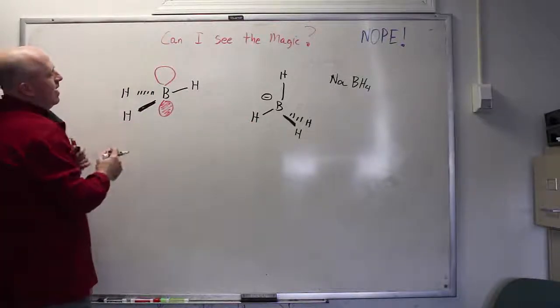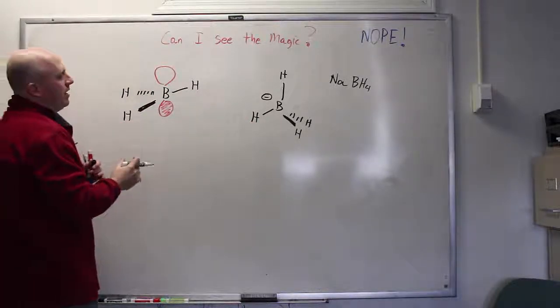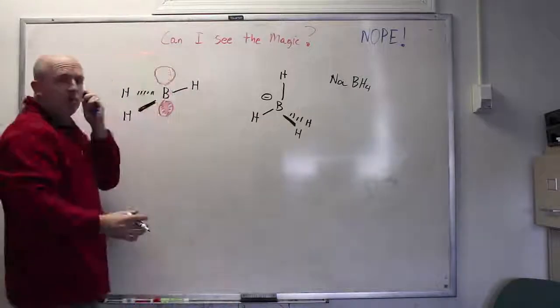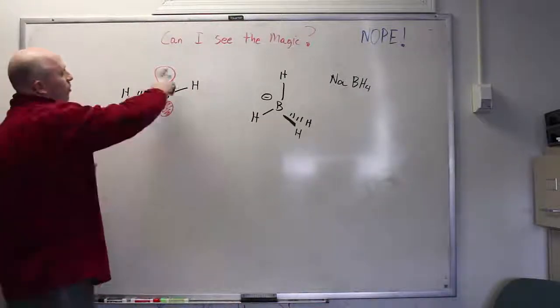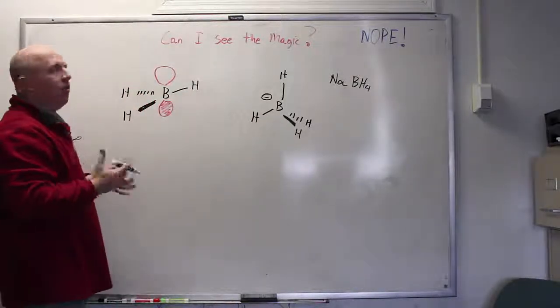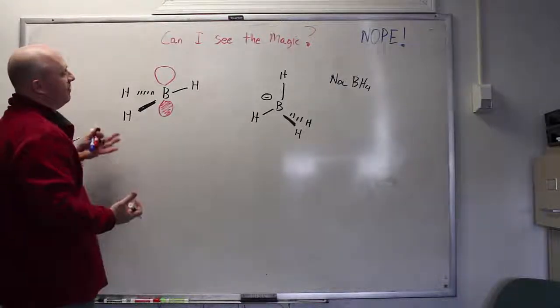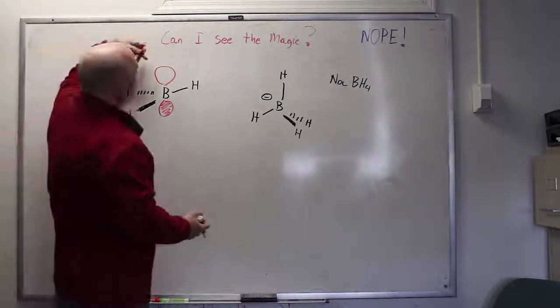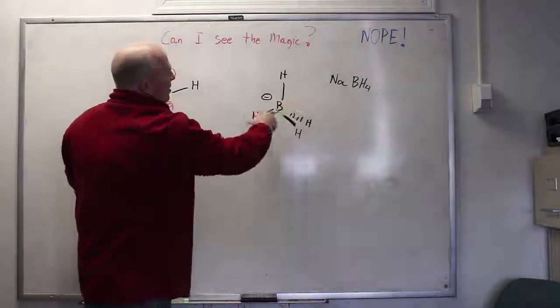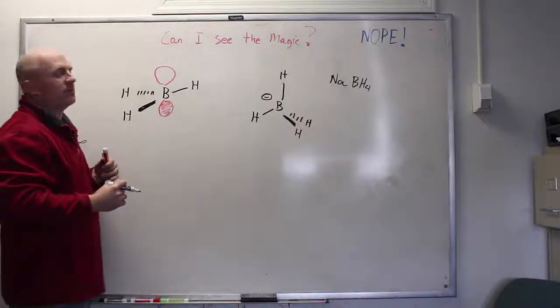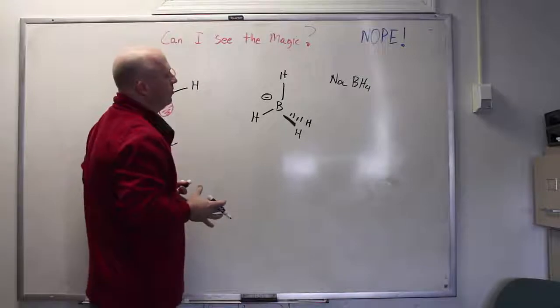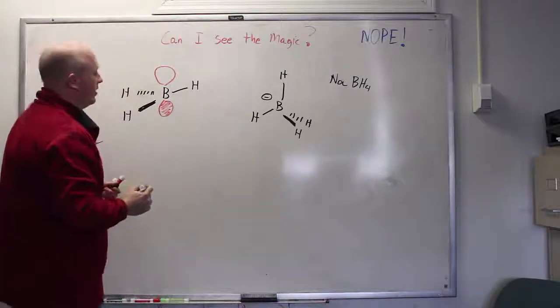So if borane is unhappy as it exists as BH3, and it's unhappy in this form, you imagine that this is fairly reactive stuff. Borane is a good Lewis acid. It always has an empty orbital to be filled by other electrons, but as soon as you fill that orbital with electrons, then all of a sudden you have reached a relatively unhappy situation. This boron now is looking to deliver its electrons somewhere else.